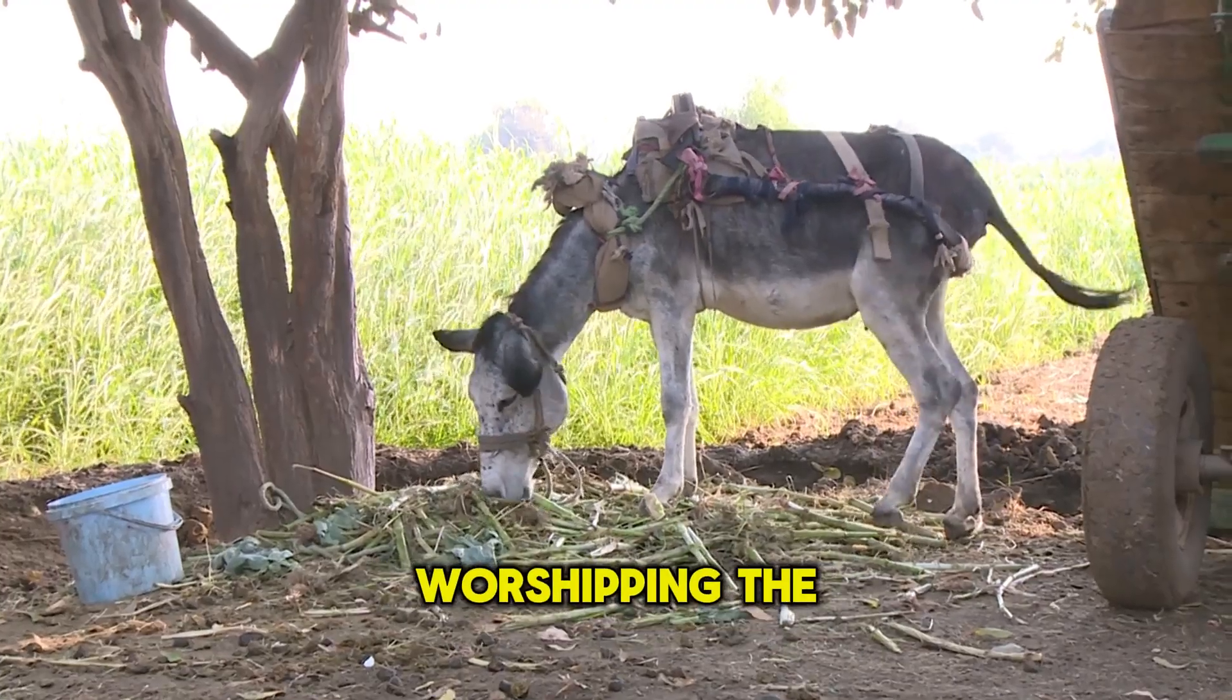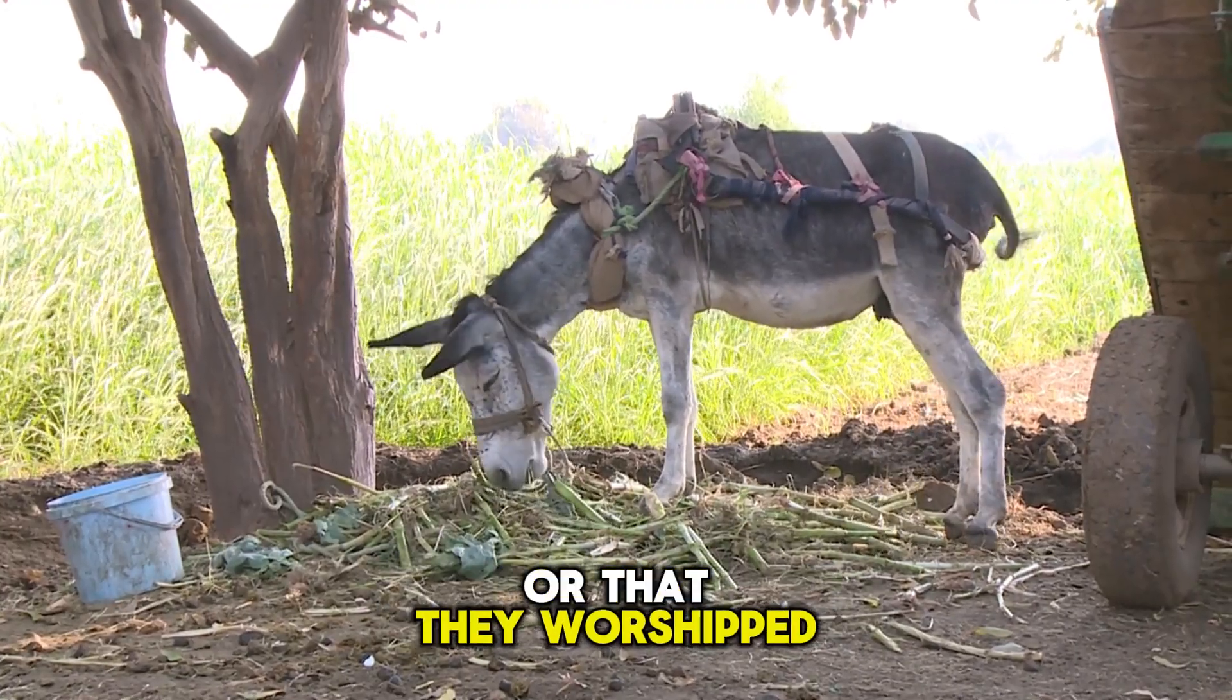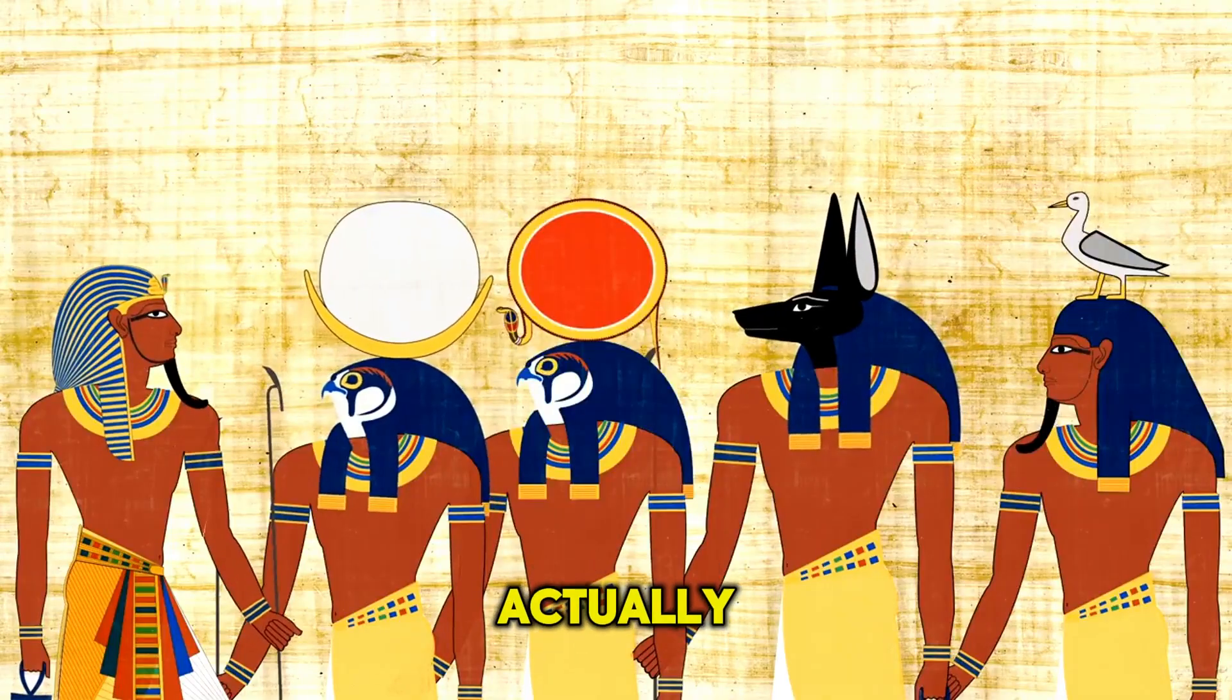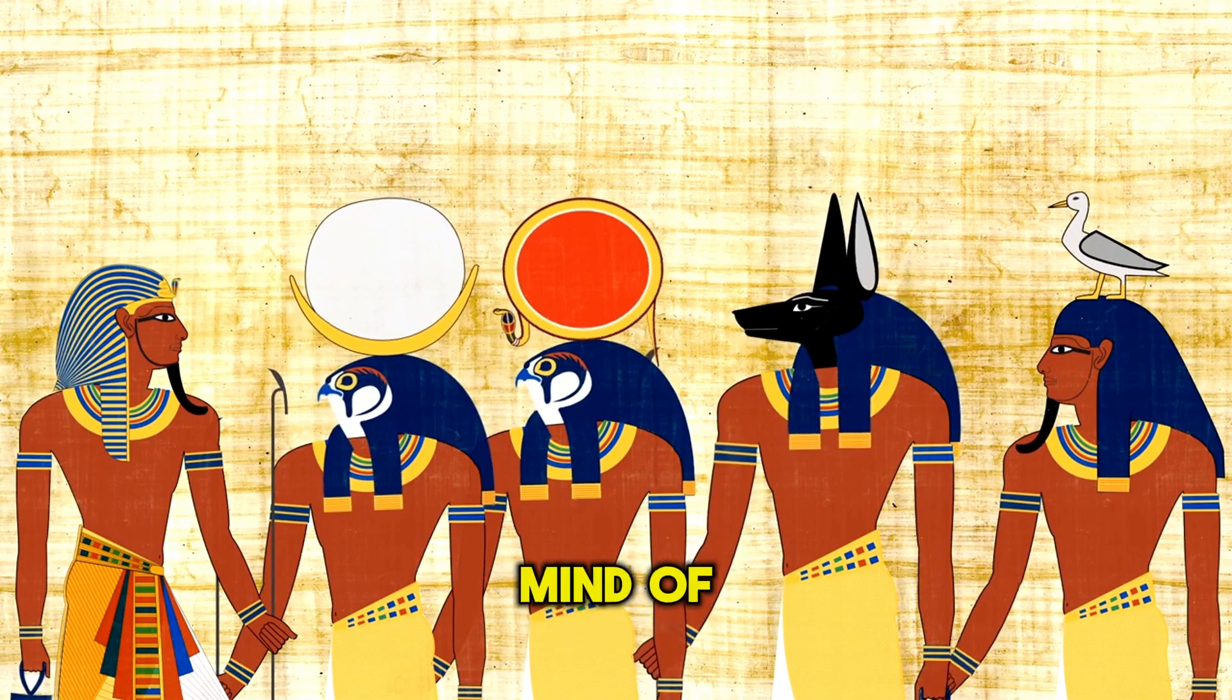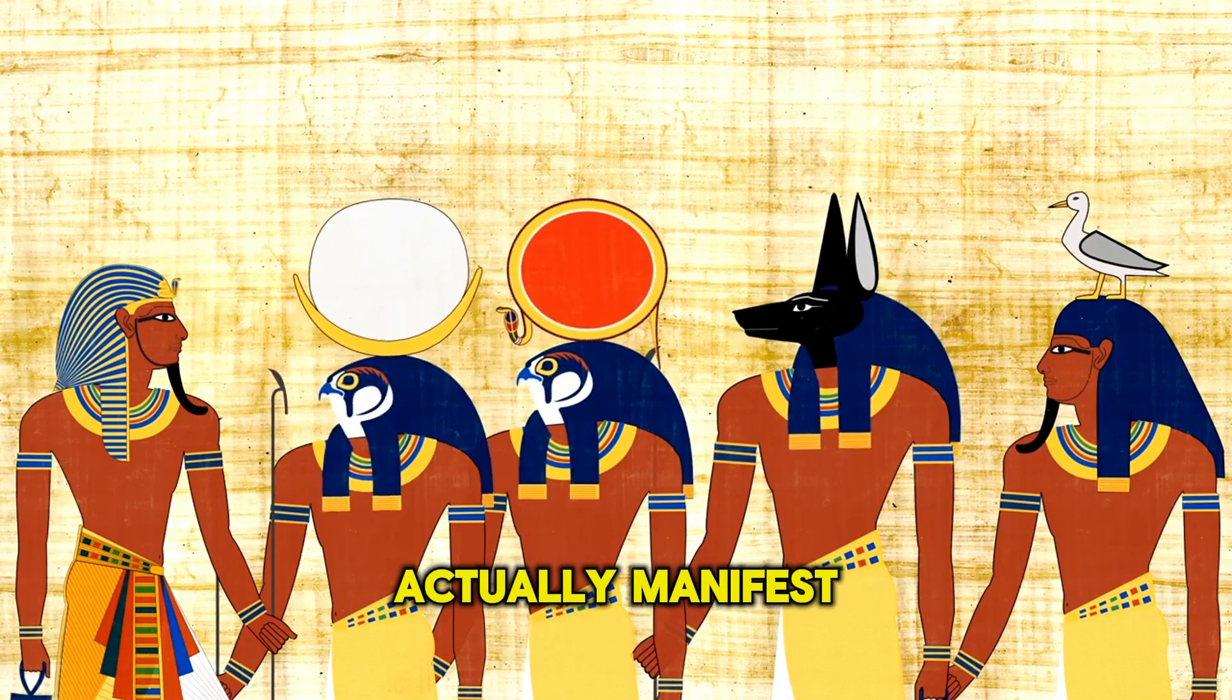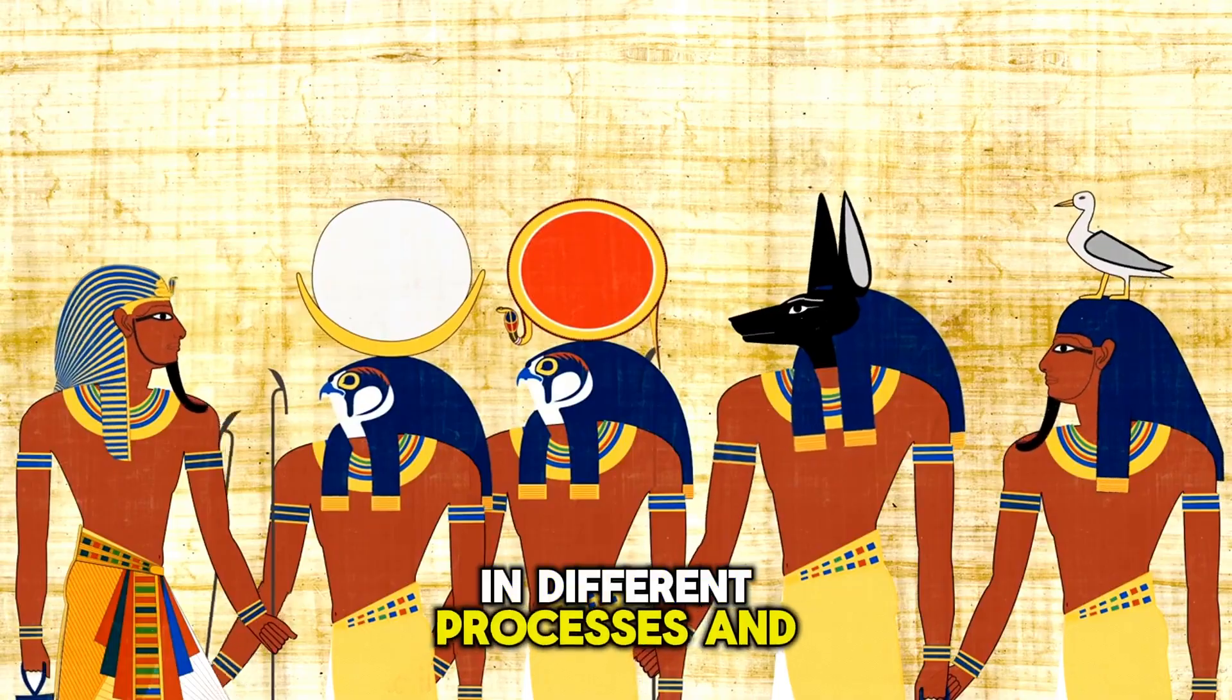The point wasn't worshipping the animals. It was that they actually understood that various aspects of power, which came from the mind of God, actually manifest themselves in different beings and different processes. And since the mind of God really manifests in these beings, the state of consciousness and power manifest in particular animals.